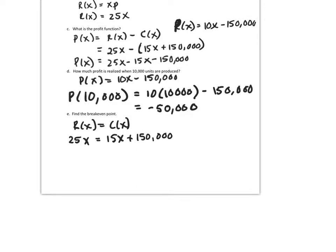And if I solve for X, that gives me 10X, when I combine my X's, equals $150,000. So X equals $15,000. So at 15,000 units is when they reach break-even.